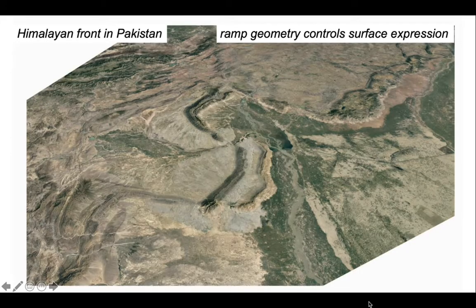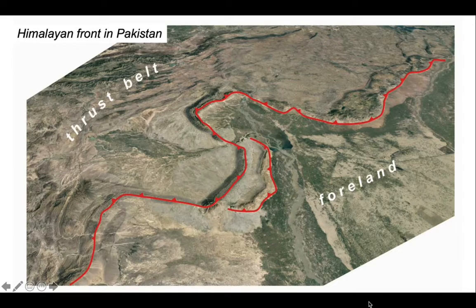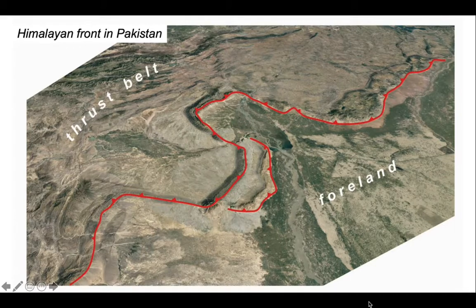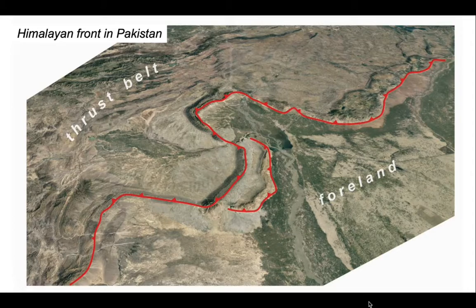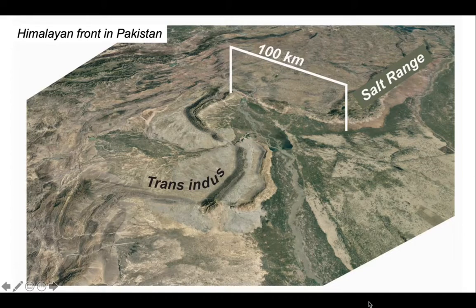We can explore this using a dramatic example from the Himalayan thrust front in Pakistan. Standing above the foreland area looking back into the thrust belt, we can see the complicated shape of the thrust front. It splays in the middle part of the image. We're looking at the salt range and trans-indus ranges, with a re-entrant about 100km deep, so it's a pretty big area.